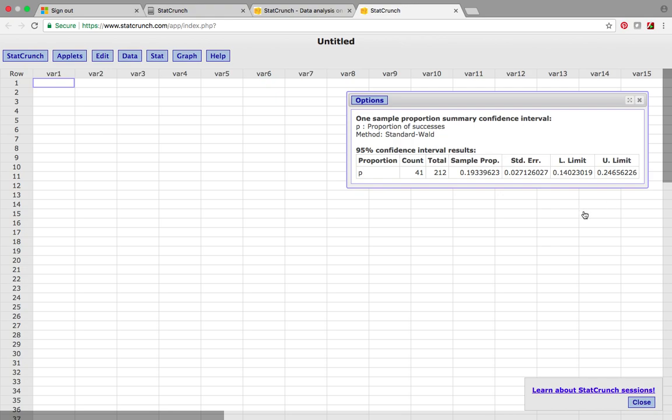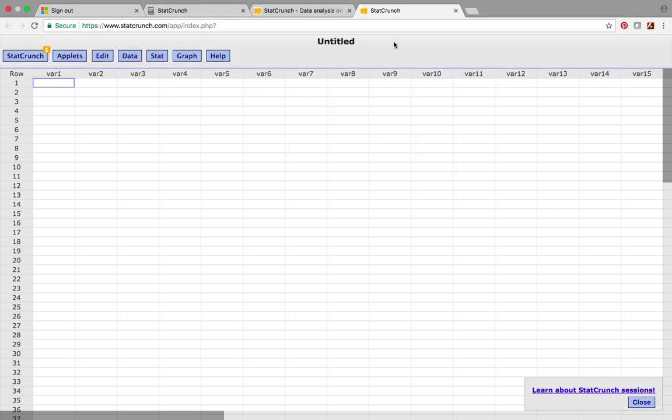You can see that the left limit is 0.140, the right limit is 0.247, just as we got by hand. Everything I think is pretty clear. The proportion that we're estimating is p. 41 out of 212 is the sample. The sample proportion is 0.19, this is just the 41 divided by 212. The lower limit and upper limit, that's our confidence interval bounds. The standard error is just the part to the right of the 1.96, so it would be the square root in this case of 0.1934 times 0.8066 divided by 212.